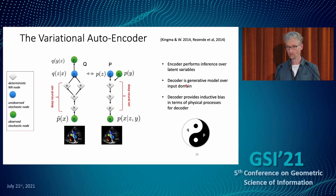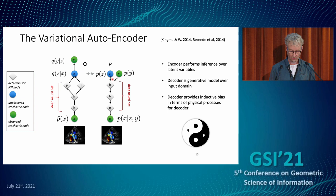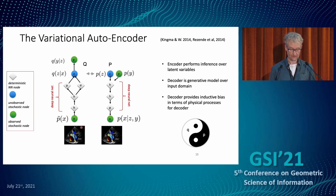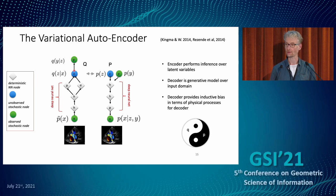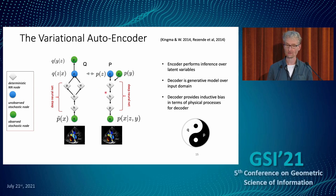The idea is that we have some latent representation z (unobserved), possibly with class labels, sent through a decoder neural network to generate an image — this is the forward model. There's also an inverse model, the encoder, which takes an input and predicts the states of the latent variables. These two things work together in a kind of expectation-maximization sense, trained so they become each other's inverses.